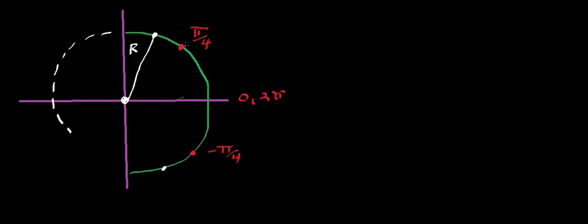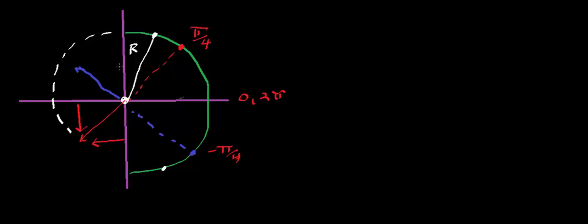We're going to assume that the rod is positively charged. Think about the electric field due to the point at the top — you draw the electric field vector, and you can draw an x-component and a y-component, which in this case points down. Now for the point at negative pi over 4 radians, we draw another electric field vector with an x-component and a y-component, but this y-component points up.